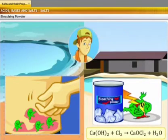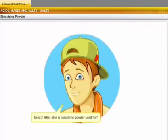Bleaching powder? Bleaching powder is chemically called calcium oxychloride, which is obtained by passing chlorine gas through calcium hydroxide. Great! What else is bleaching powder used for?